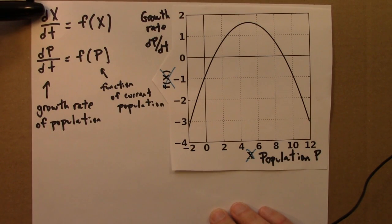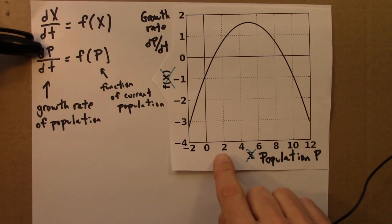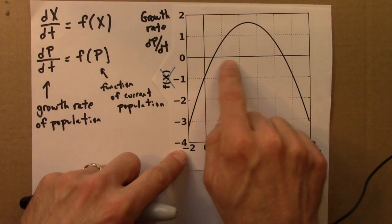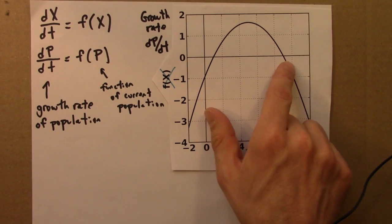All I'll do is replace the variable x by the variable p, and we'll think of p as the population size. And since we're measuring population in these funny units, maybe this is population in metric tons of biomass or something.